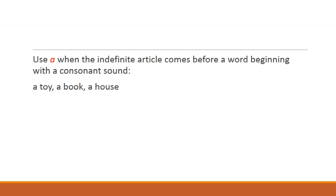So when will you use A? You will use A when the indefinite article comes before a word beginning with a consonant sound. Whenever a noun begins with a consonant sound, you have to use A. For example: a toy, a book, a house, a bag, a mirror, a pen, a mask. We are not talking just about consonant letters — we have 21 consonant letters — but here we are talking about consonant sounds.